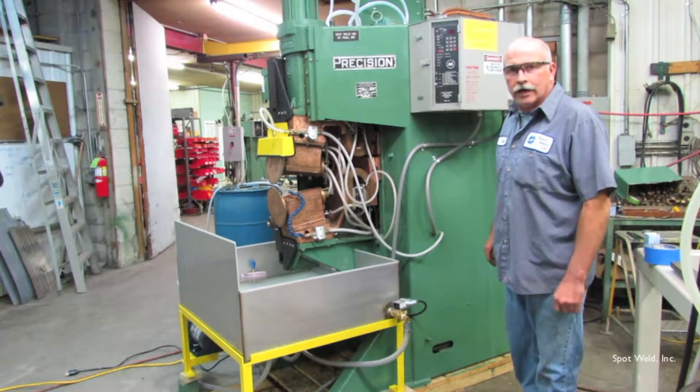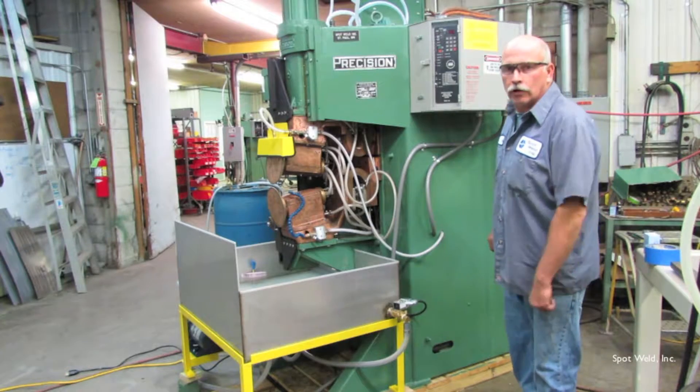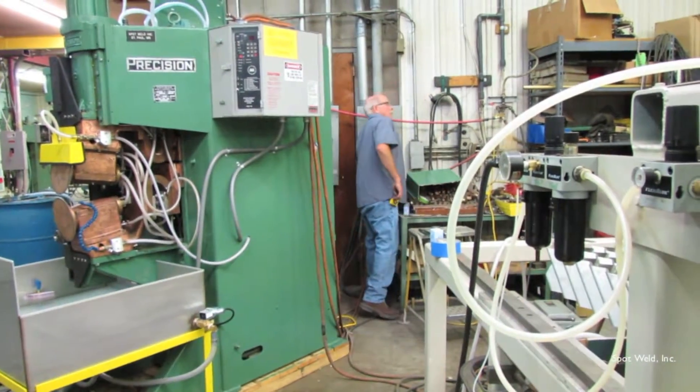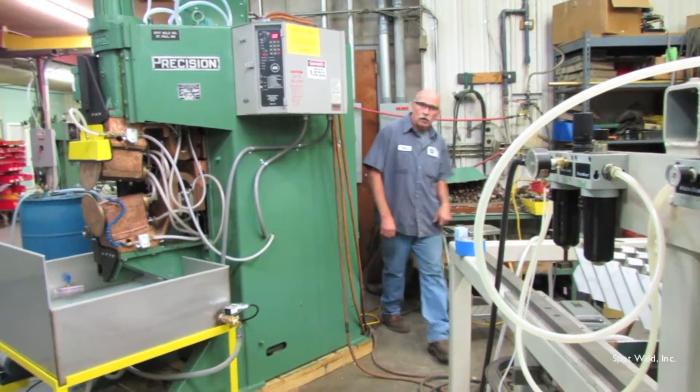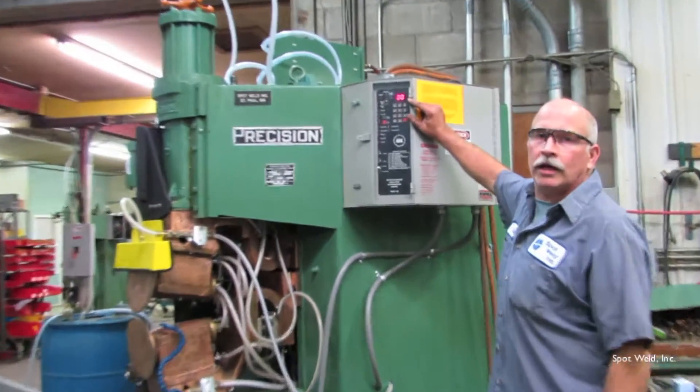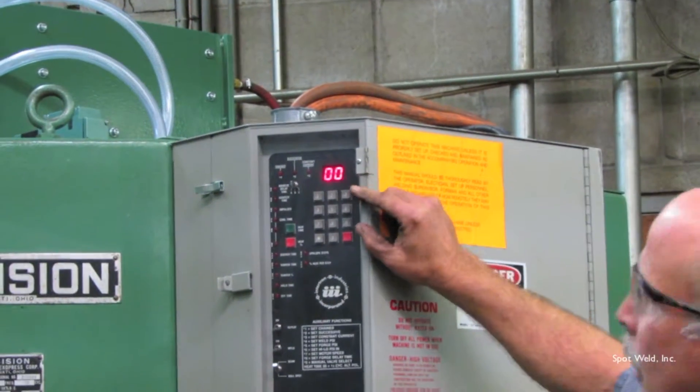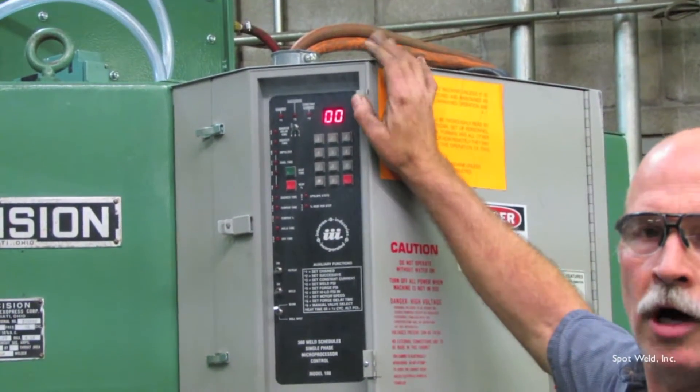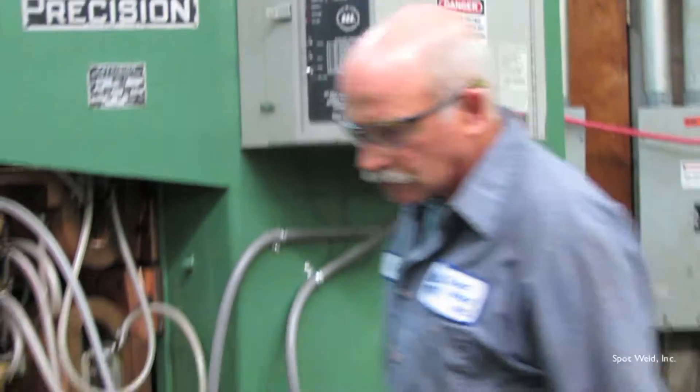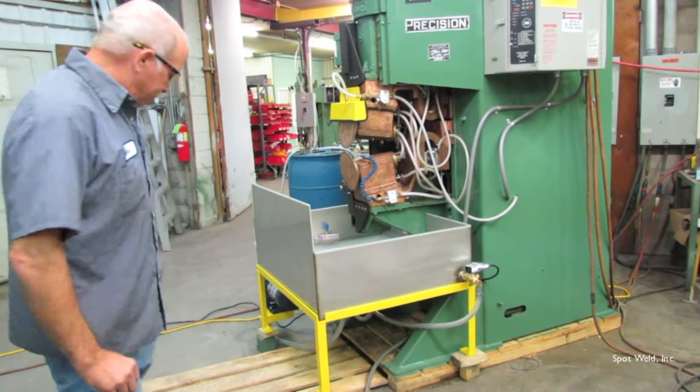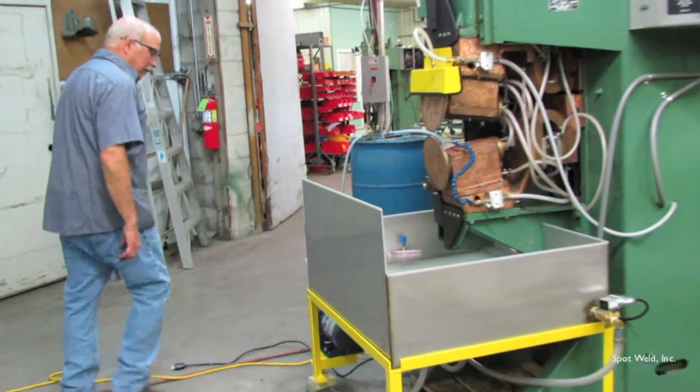First thing we're going to do is turn on the 480 volt power. When you power up your machine, your weld schedule will be in the window. If there is no number in the window, then we have a small problem. Once you turn power on, you're going to have to plug in your pump, recirculate the pump.